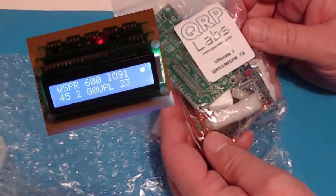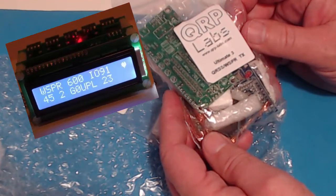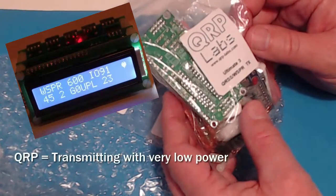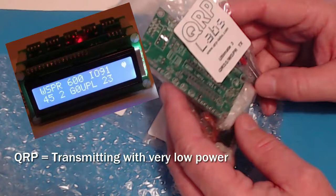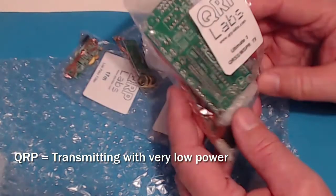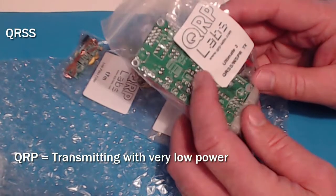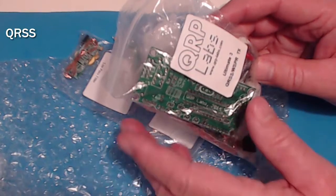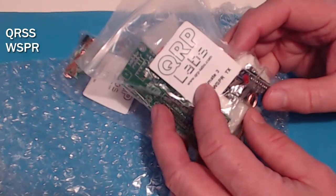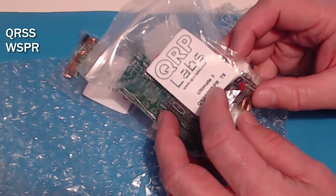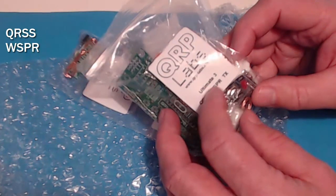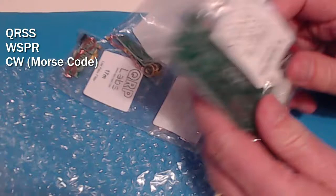This is a kit created by Hans Sommers, G0UPL, the QRP Labs Ultimate 3 Transmitter. It's a QRP transmitter that does QRSS, which is really slow speed Morse code, and it also does Whisper, which stands for Weak Signal Propagation Reporting, and of course it'll do ordinary QRP Morse code. So it could be a great kit to build.